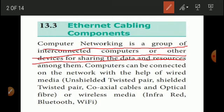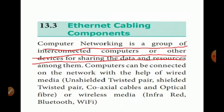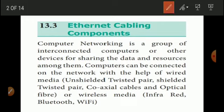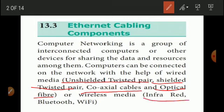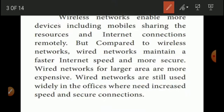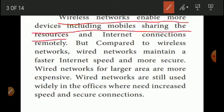You can connect in wired mode or wireless mode. Wired options include Unshielded Twisted Pair (UTP) cable, Shielded Twisted Pair (STP) cable, Coaxial cable, and Optical Fiber cable. Wireless media uses Bluetooth, infrared, and Wi-Fi technology. Wireless networks enable more devices, including mobile devices, to share resources and internet connections.